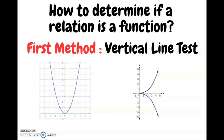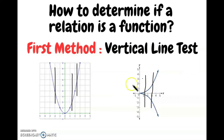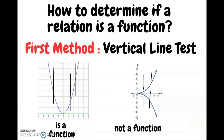The first way to determine if a relation is a function is by using the vertical line test. The vertical line test states that if a vertical line crosses a graph at more than one point, it is not a function. You can see me drawing vertical lines on the graphs below. The first graph is a parabola where all vertical lines cross at one point — it is a function. The second graph has vertical lines crossing at two points, so it is not a function.